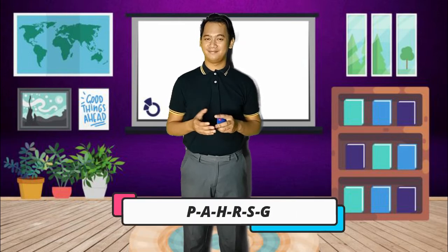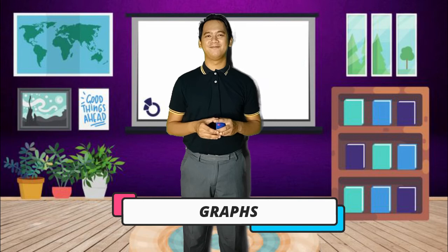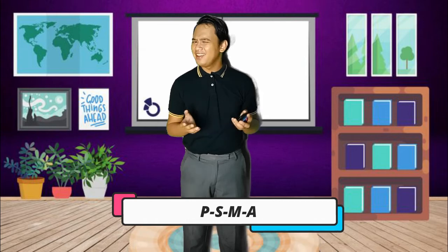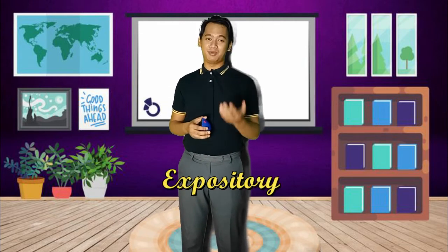Next one... And the last one... The answer is... Now, who can enumerate all of the words we have identified through the jumbled letters? Fantastic! The words are: Expository, Tables, Graphs, and Pops.